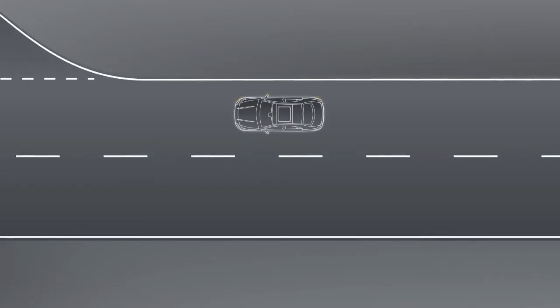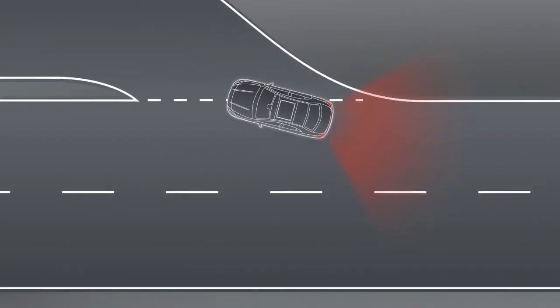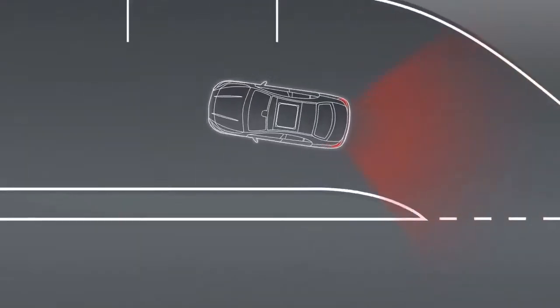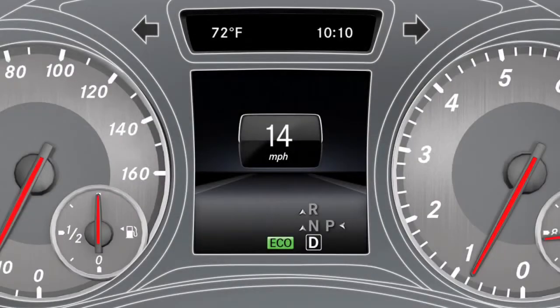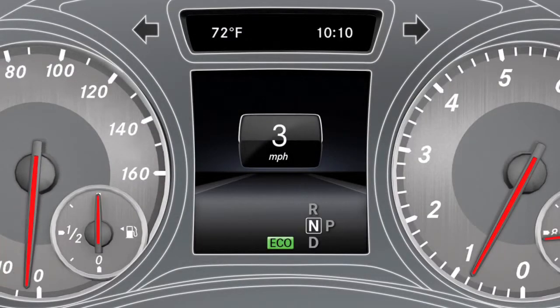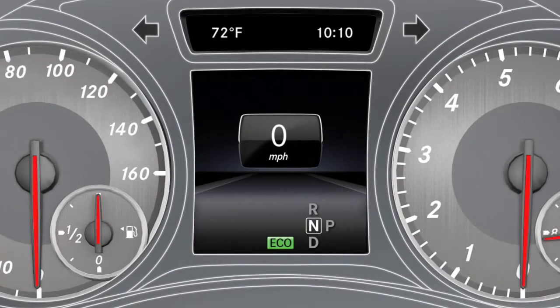The engine is switched off automatically if you brake your vehicle to a standstill in transmission positions D or N. If you remove your foot from the brake or accelerate, the engine will also start again.